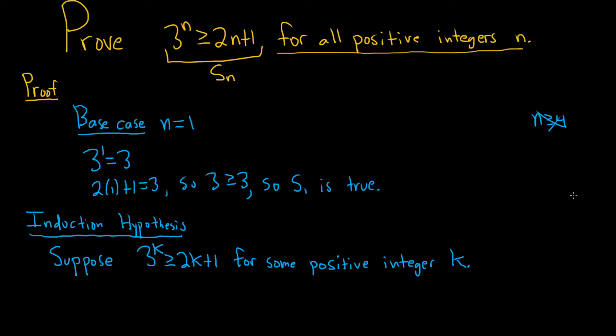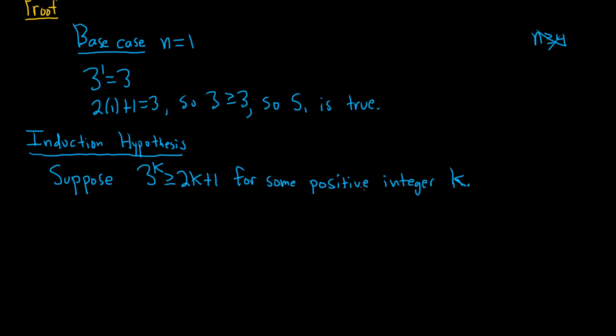Now if there was a restriction in the problem, like say you had n greater than or equal to 4, then you would specify that down here, and chances are you'd probably have to use it. So in this case, we do know something about k. It's a positive integer, so it's greater than or equal to 1. So we might have to use that, we'll find out. I actually have not done this problem. And so now the induction step.